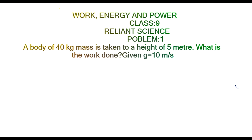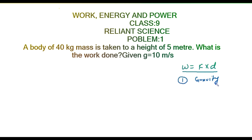Let us look at the first problem: a body of 40 kg mass is taken to a height of 5 meters — what is the work done? First, we need to understand work. Work equals force into displacement, or force into distance in the direction of force applied. The first type is work done against gravity, where we use: Work = Force × distance, and Force = mass × acceleration due to gravity (g).